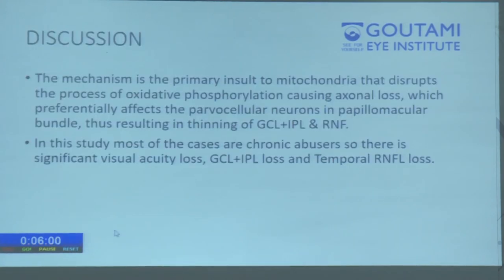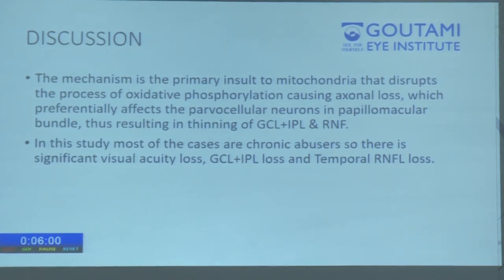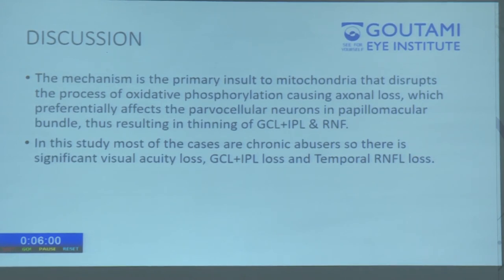The mechanism of primary insult involves mitochondrial damage that disrupts the process of oxidative phosphorylation, causing axonal loss which preferentially affects the parvocellular neurons in the papillomacular bundle, resulting in thinning of GCL+IPL and RNFL. In this study, most cases were chronic abusers, so there was significant visual acuity loss and GCL, IPL, and temporal RNFL loss as well.